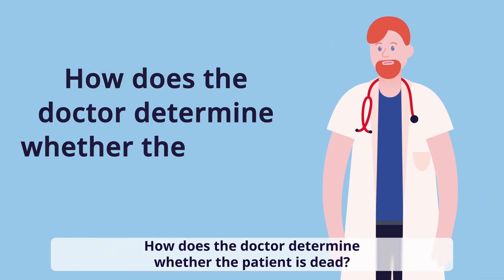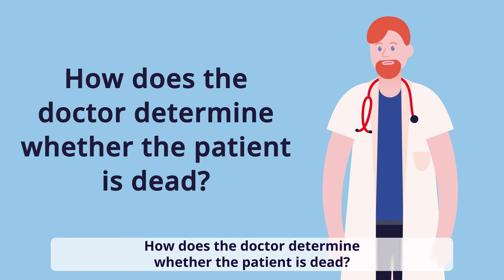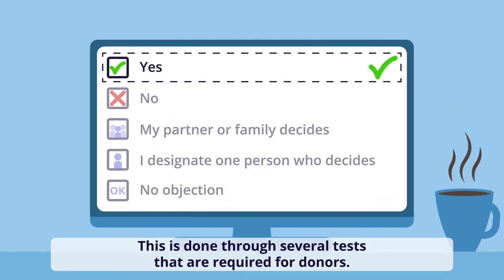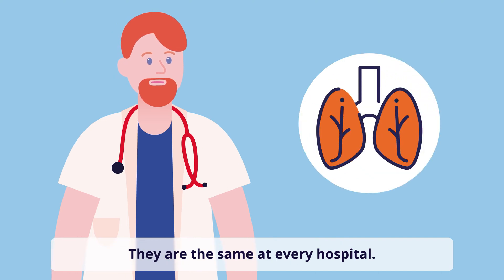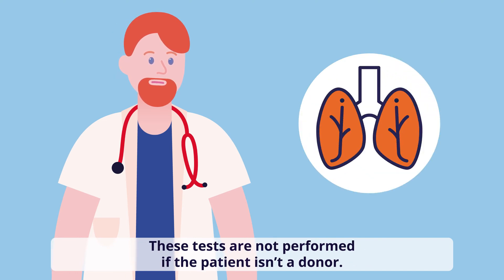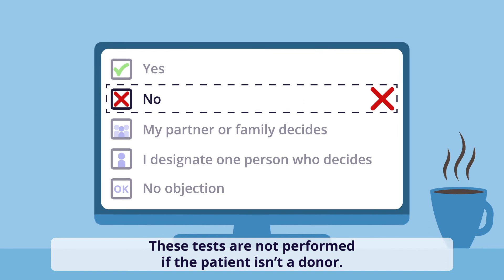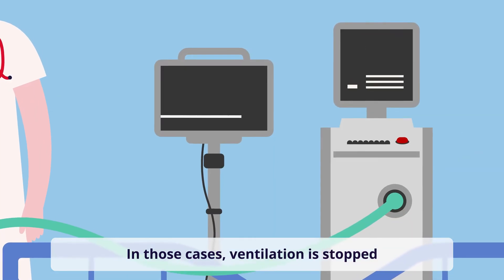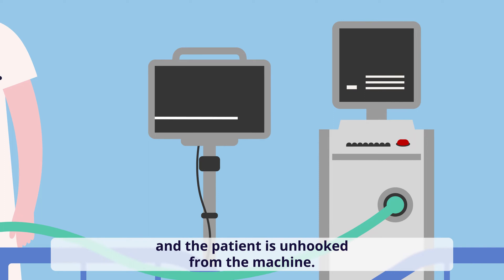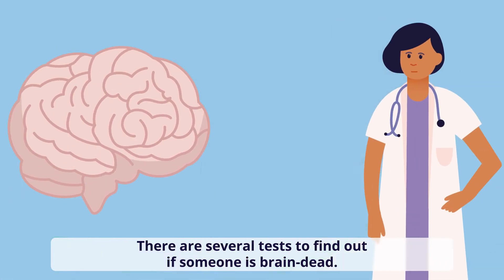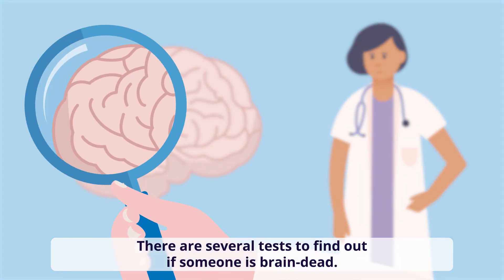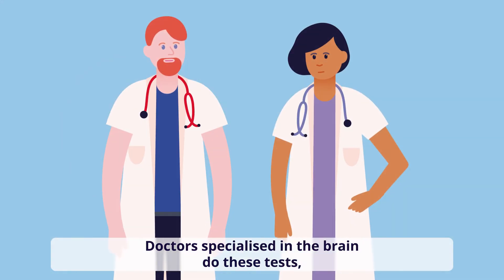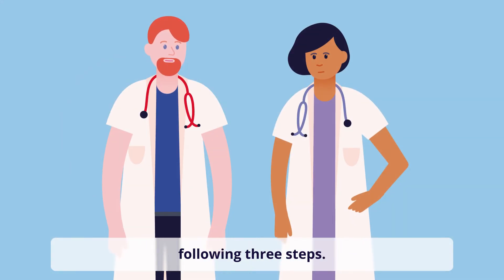How does the doctor determine whether the patient is dead? This is done through several tests that are required for donors. They are the same at every hospital. These tests are not performed if the patient isn't a donor — in those cases, ventilation is stopped and the patient is unhooked from the machine. There are several tests to find out if someone is brain dead. Doctors specialised in the brain do these tests, following three steps.